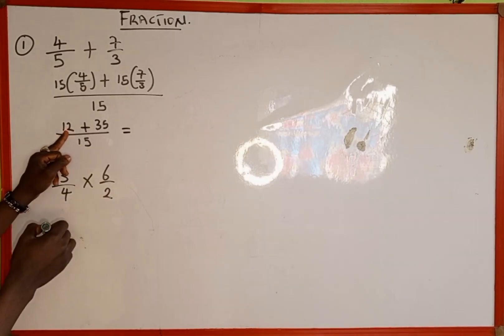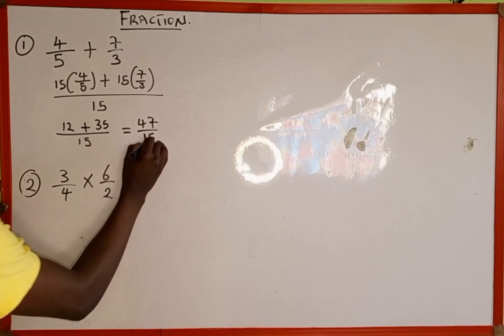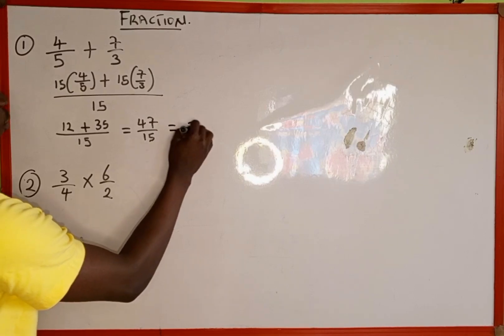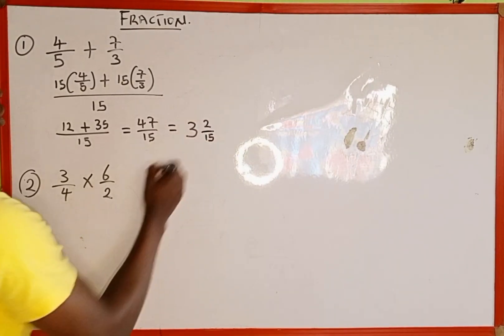Then divided by 15, which is going to be equal to 12 plus 35, which is 47, then divided by 15. And when you divide 47 by 15, it's going to give us 3 whole number 2 over 15.